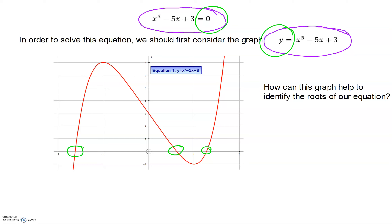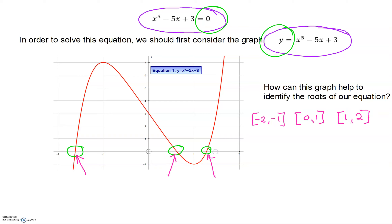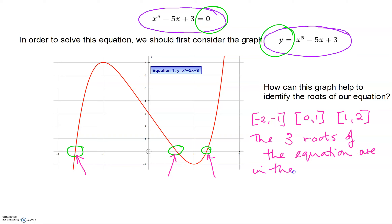I can tell you they are irrational — you can't tell that, but I know they are. So we're looking at ways of how we can find these roots using a non-algebraic method. Where exactly are our three roots? We can see they are within certain intervals. The first interval is (-2, -1), which contains the root to the left. We have interval (0, 1), which contains the middle root, and the interval (1, 2), which contains the root on the right-hand side.